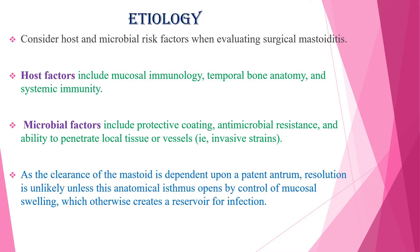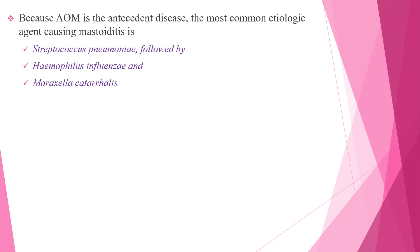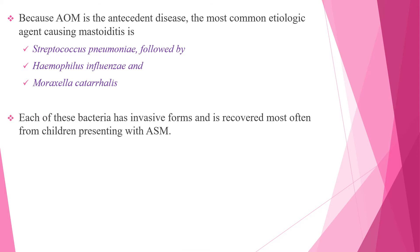As the clearance of the mastoid is dependent upon a patent aditus and antrum, resolution is unlikely unless this anatomical pathway opens by control of mucosal swelling, which otherwise creates a reservoir for infection. Because acute otitis media is the antecedent disease, the most common etiologies causing acute mastoiditis include Streptococcus pneumoniae, Haemophilus influenzae, and Moraxella catarrhalis. Each of these bacteria has invasive forms and is recovered most often from children presenting with acute suppurative mastoiditis.